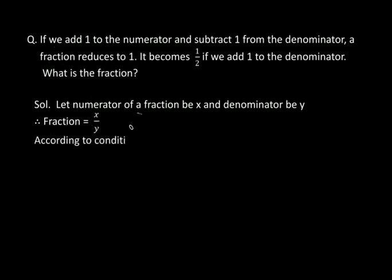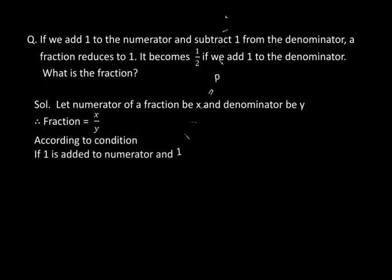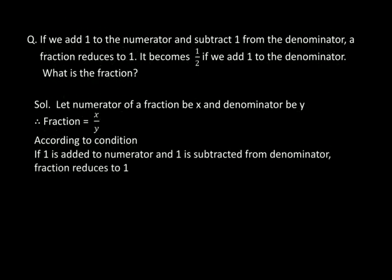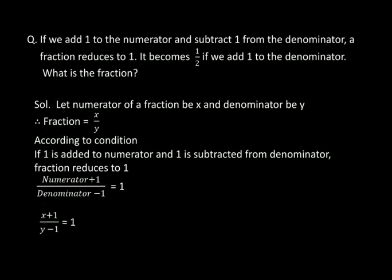Now, according to condition 1: if 1 is added to the numerator and 1 is subtracted from the denominator, the fraction equals 1. So numerator plus 1 upon denominator minus 1 equals 1. Numerator is x and denominator is y, so x plus 1 upon y minus 1 equals 1.